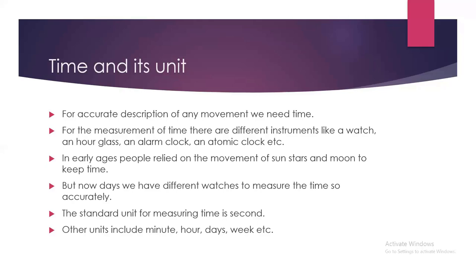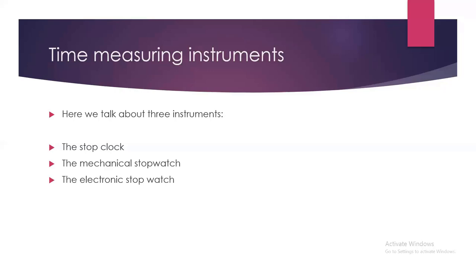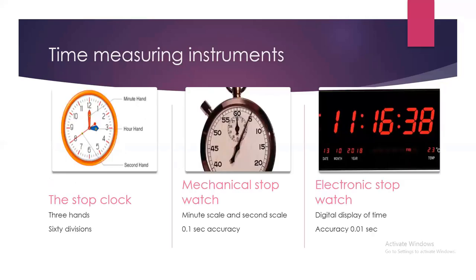There are different instruments that we can use to measure time. Here we discuss three instruments: the stop clock, the mechanical stopwatch, and the electronic stopwatch. In a stop clock, you can see there are 60 divisions and each division indicates one second. There are three hands — the blue hand shows the hour hand, the red hand shows the minute hand, and the largest red hand shows the second hand.